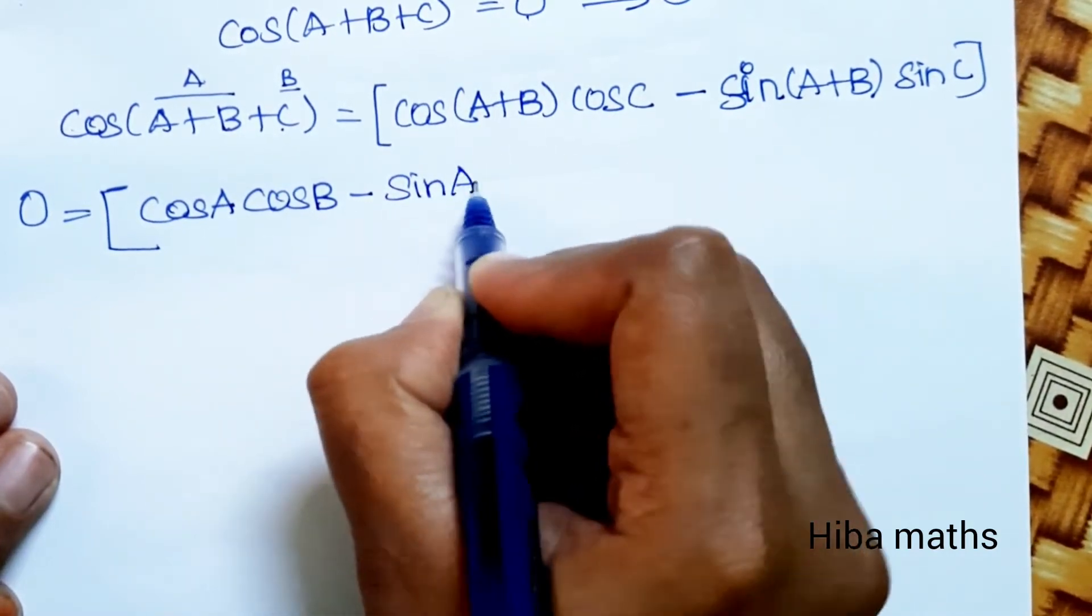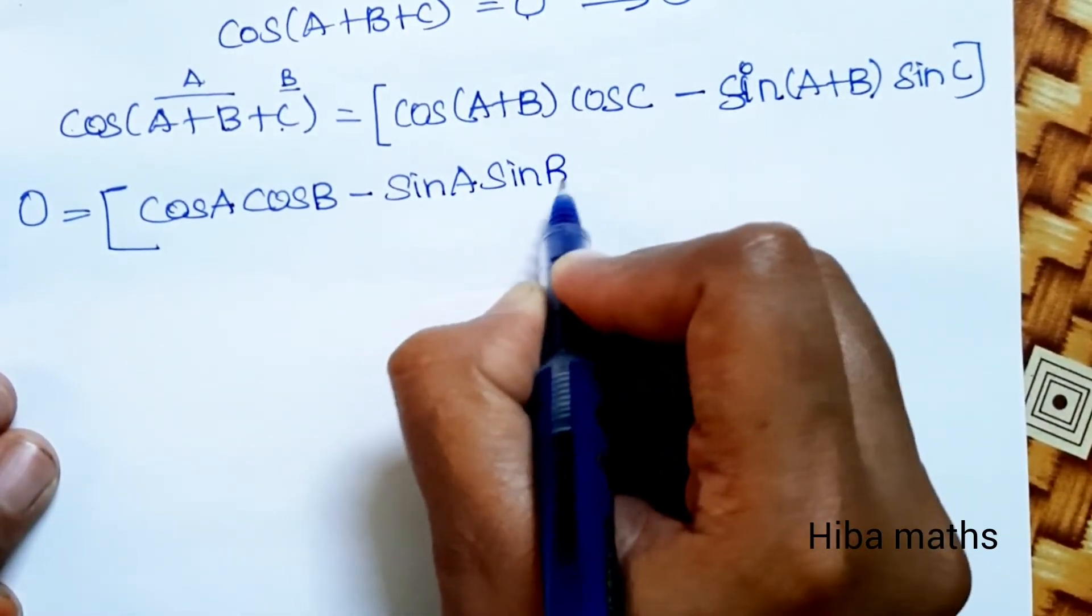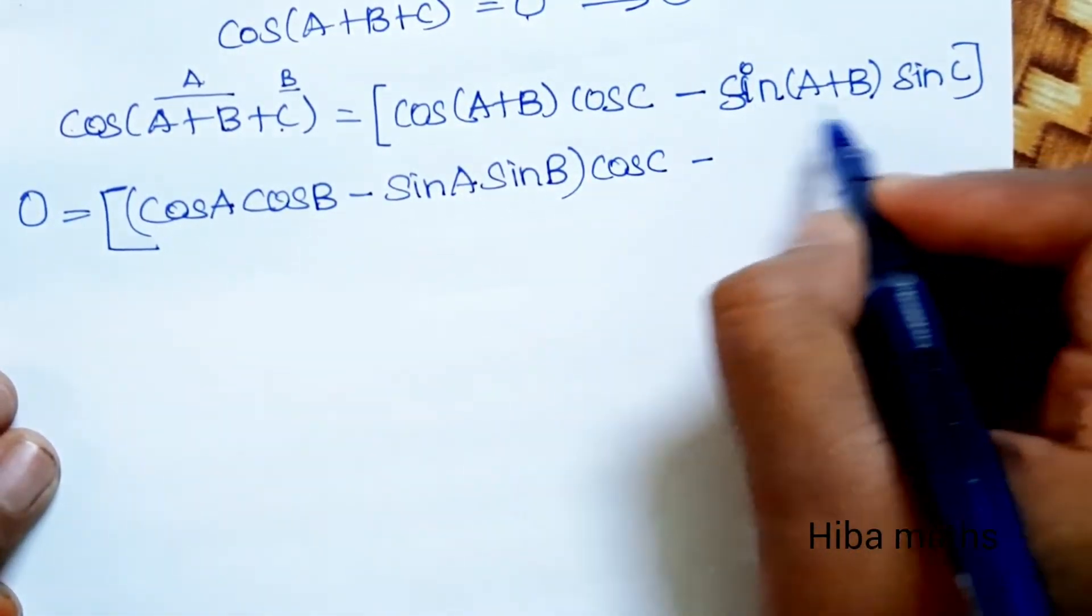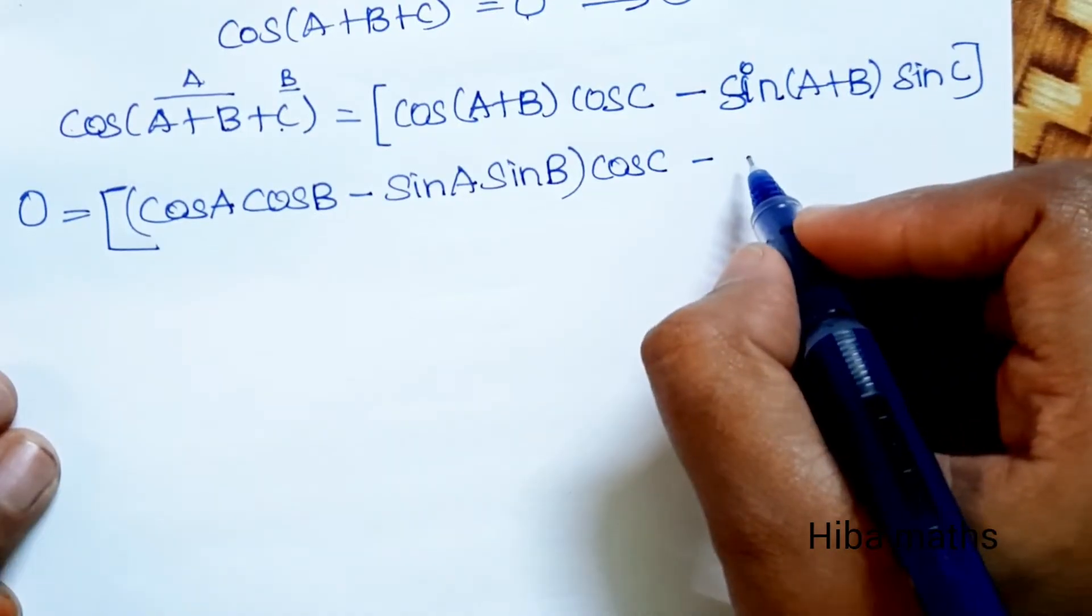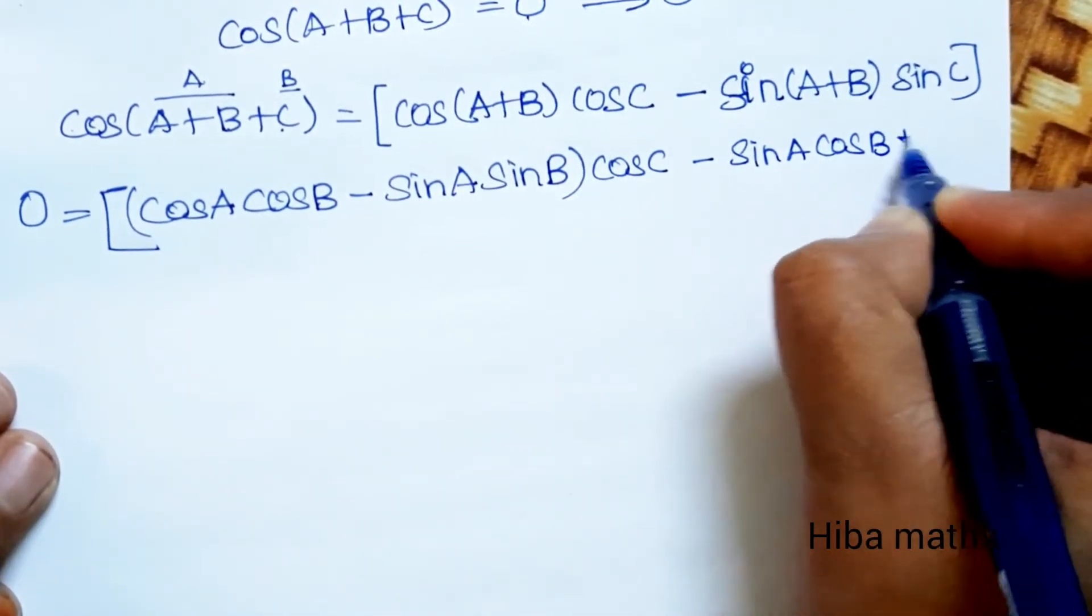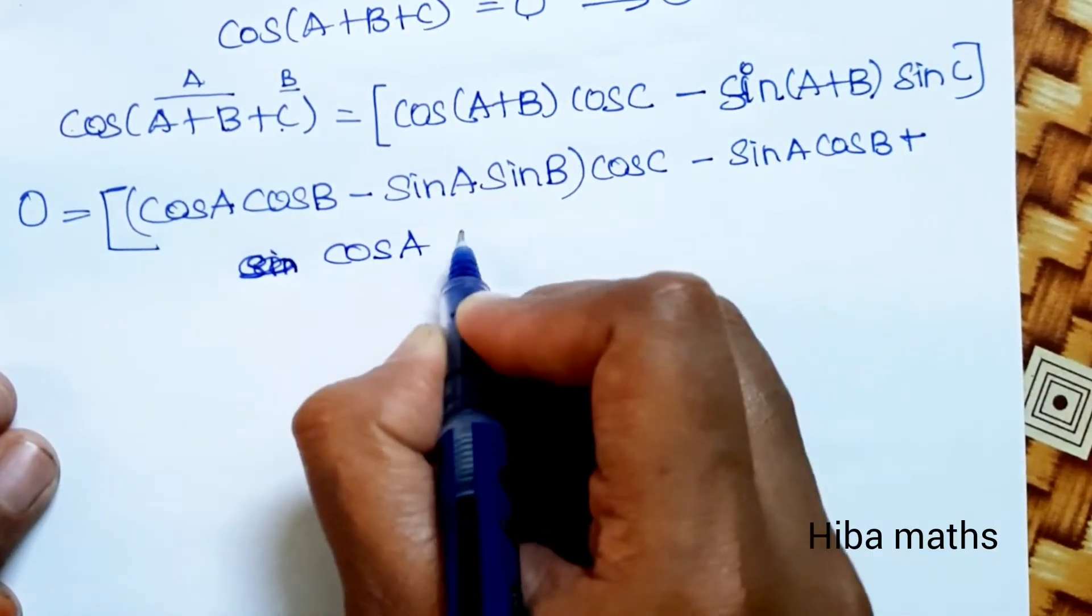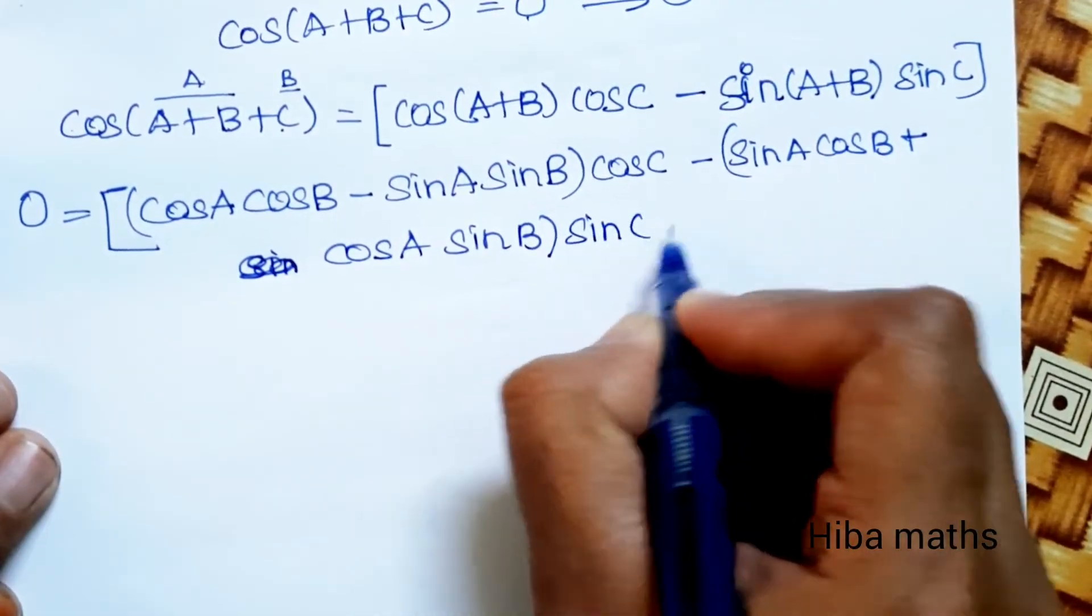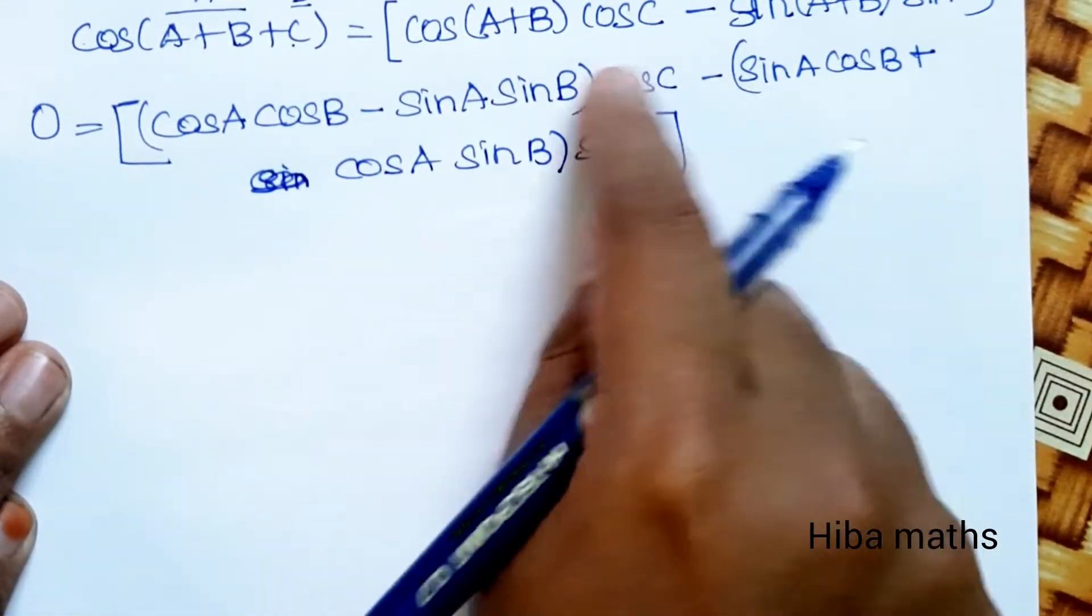Expanding further, cos(A+B) is cos A cos B minus sin A sin B. Sin(A+B) is sin A cos B plus cos A sin B. The value sin C is common with cos C, and sin C multiplied.